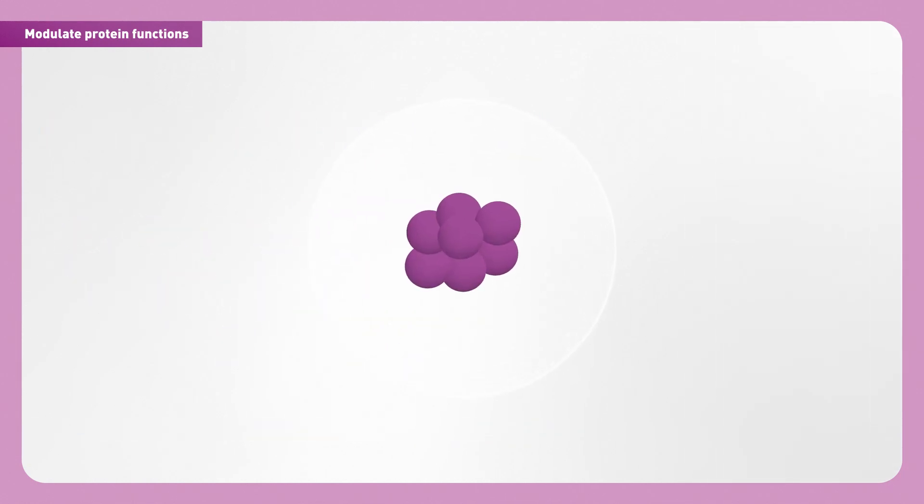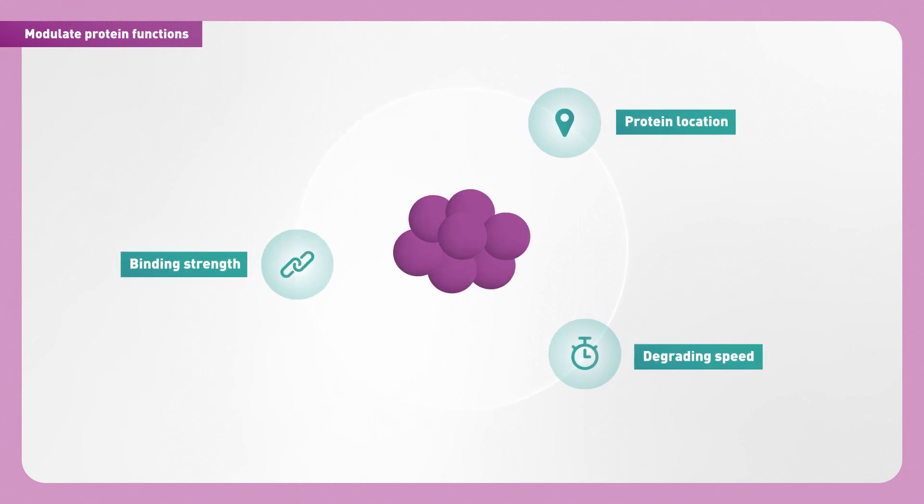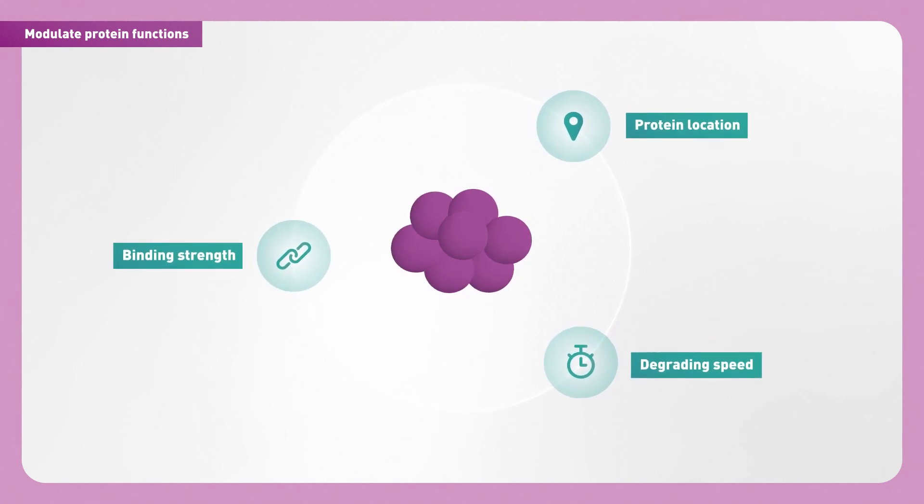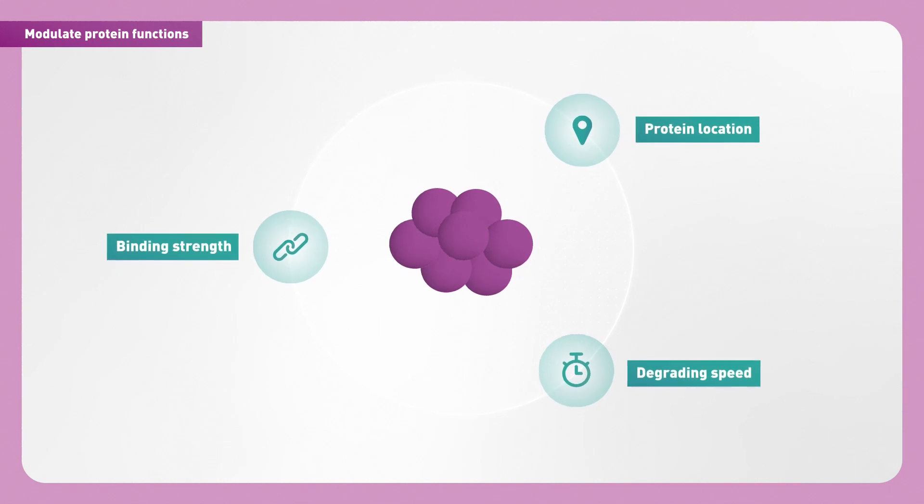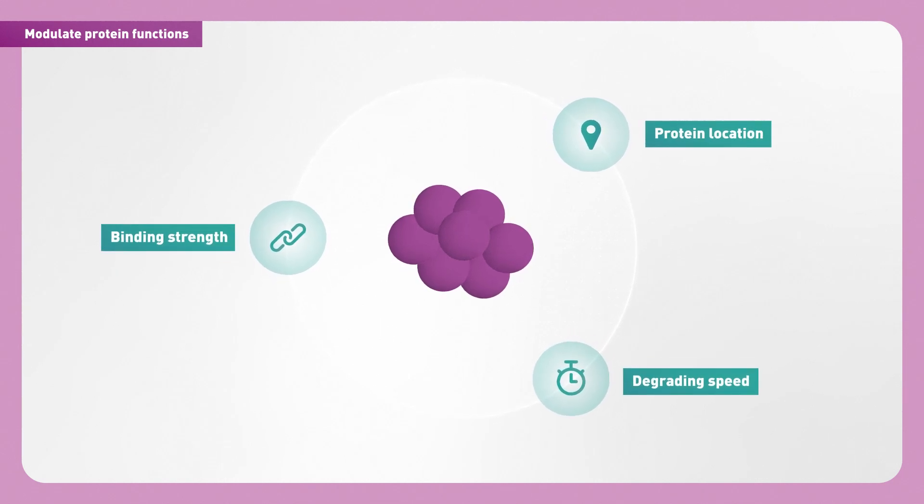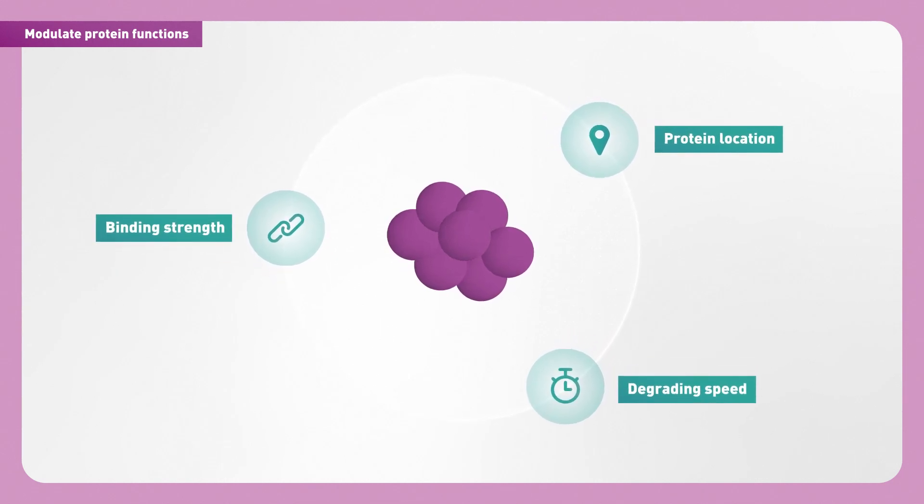Modulating protein function can take many shapes and forms. We can change where a protein localizes in the cell, how fast it is being degraded, and how strongly it binds to a partner protein. This is a very precise way of altering protein function, when and where it matters.